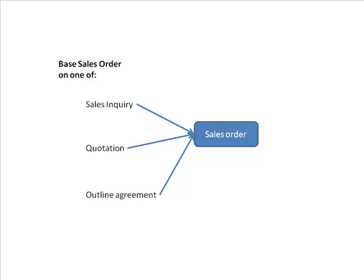You can base a sales order on one of three prior documents: a sales inquiry, a quotation, or an outline agreement. Terms like contract, outline agreement, and scheduling agreement are used — they have subtle differences but all refer to some prior agreement on which the sales order is based.